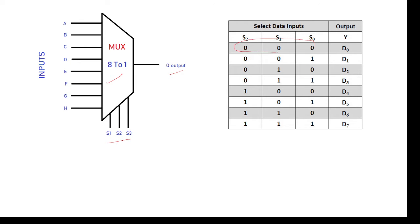When we give selection input 0 0 0, we need to get d0. When we give 0 0 1, we need to select d1. When we give 0 1 0, we need to select d2. So like this, out of 8 lines, we select based on our requirement.